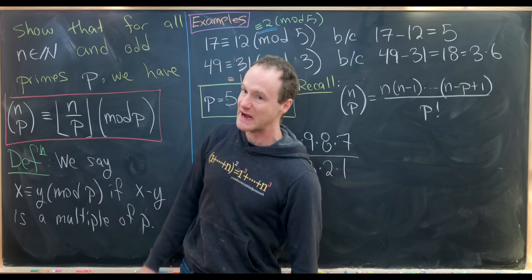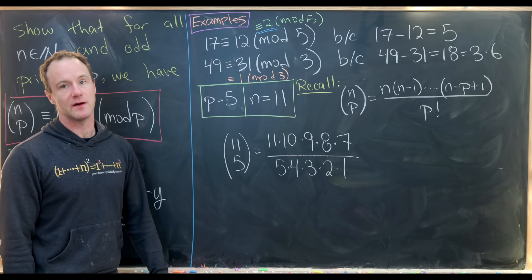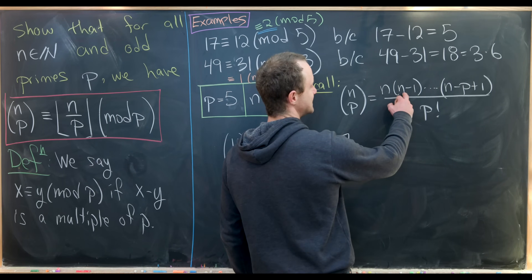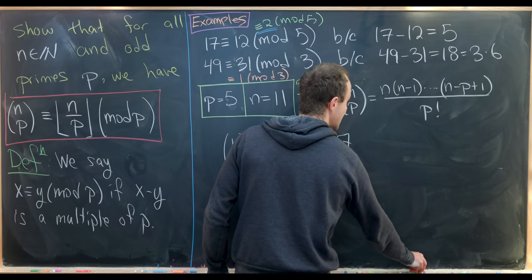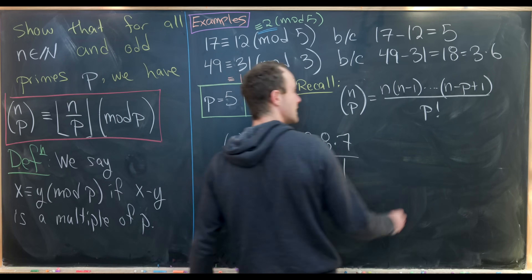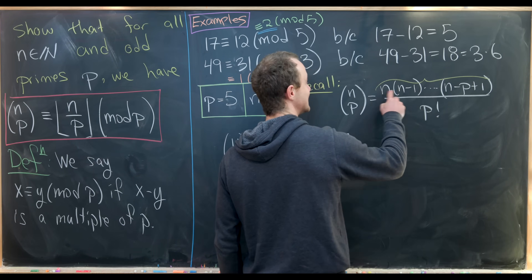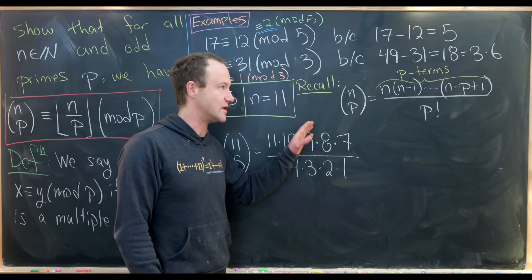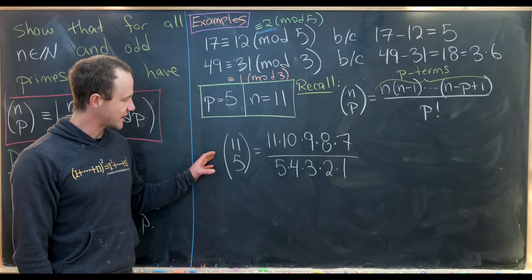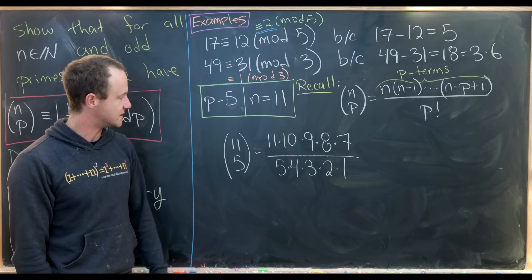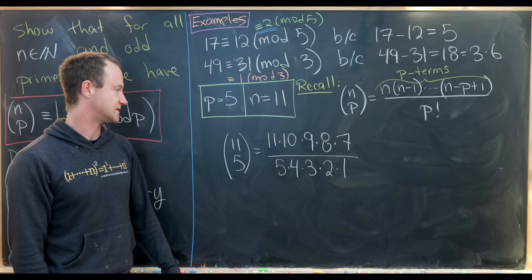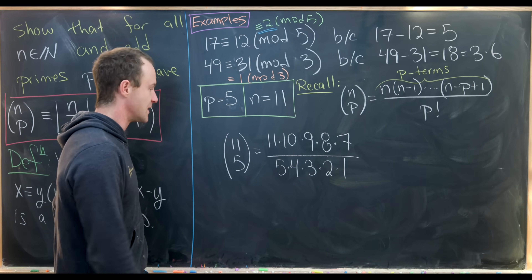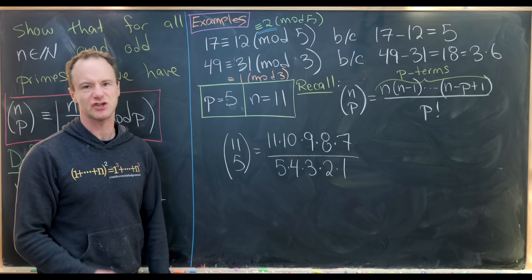Let's do an example of our identity to see how it works. Take p to be the odd prime 5 and n to be 11. Recall that the binomial coefficient n choose p equals n times (n minus 1) times (n minus 2) down to (n minus p plus 1), all over p factorial. The numerator contains a descending product of p total terms. So 11 choose 5 has 11 times 10 times 9 times 8 times 7 in the numerator, and 5 times 4 times 3 times 2 times 1 in the denominator.